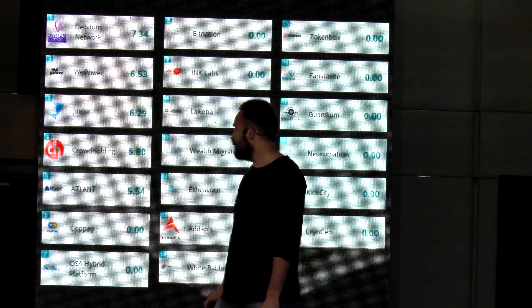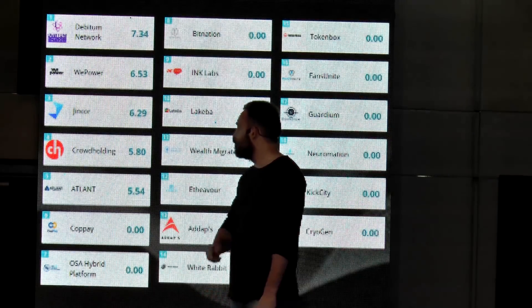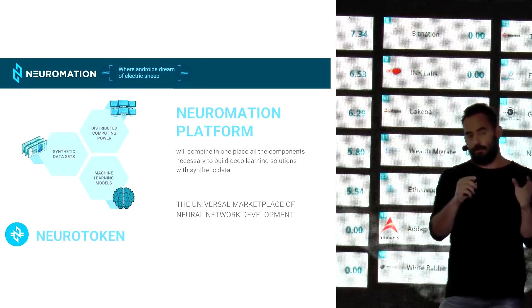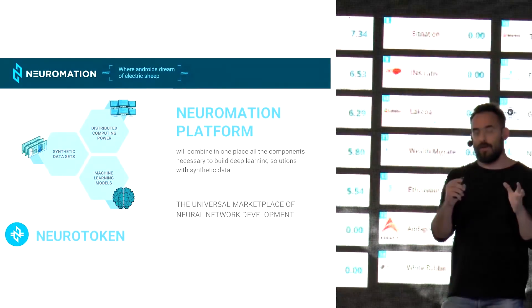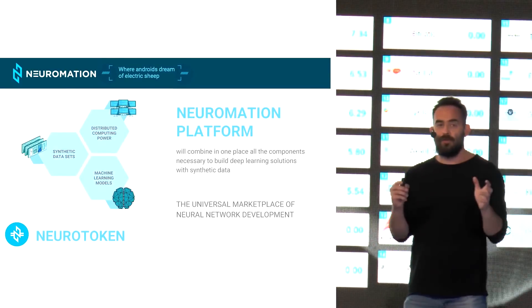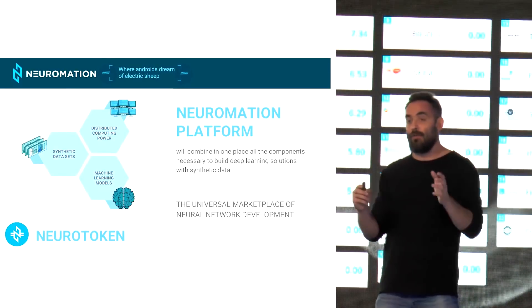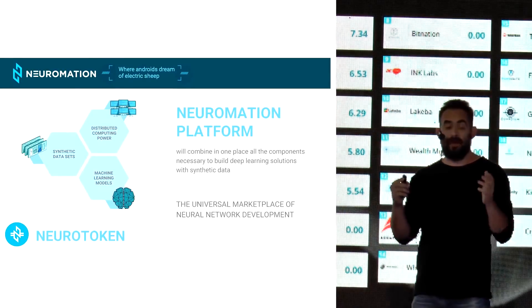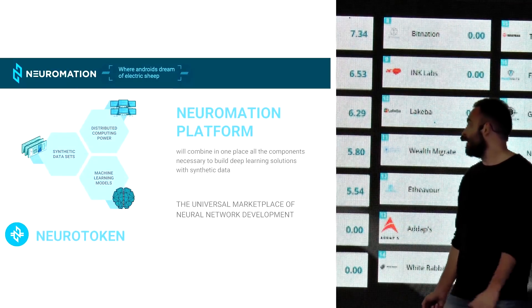Let me quickly jump to the Neuromation platform. What we will do is connect these two needs in a single marketplace. In order for a deep learning algorithm to train, it has to have all of these data examples. What we are doing is generating virtual worlds that are basically creating this data. To create this virtual world, you need a lot of computing capacity because all of this is done by computer.